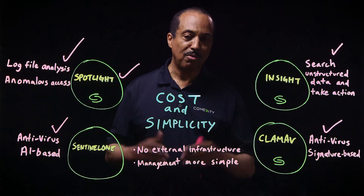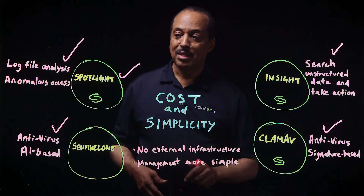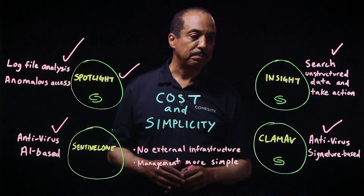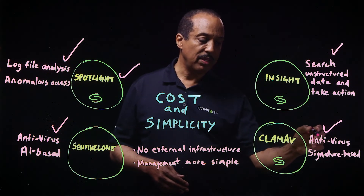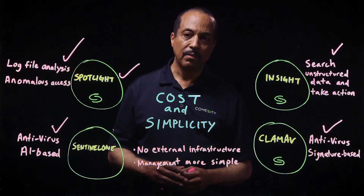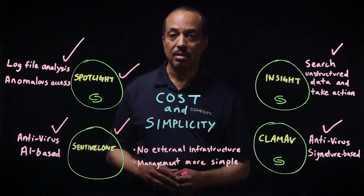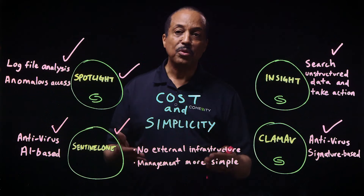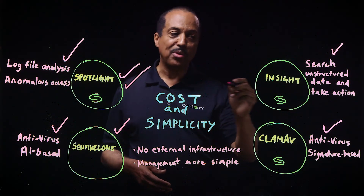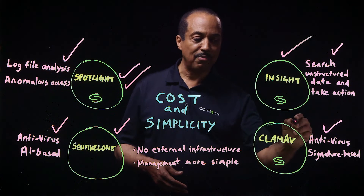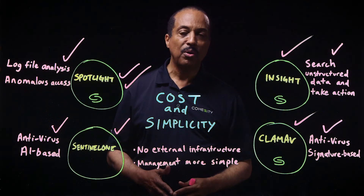First of all, how much of your software is free? That's right, I said free – zero, zip, nada. Spotlight is absolutely free, developed by Cohesity, as well as InSight – absolutely free, developed by Cohesity. And then CLAM-AV, the signature-based antivirus, absolutely free. And although SentinelOne requires license fees after a 60-day trial, the deployment of the app on infrastructure is absolutely free because it's deployed on the Cohesity platform – as well as Spotlight, InSight, and CLAM-AV. There is no external infrastructure required at all.